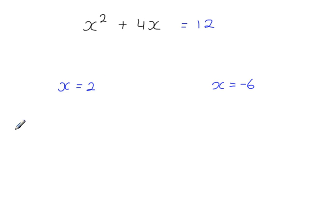So we have x squared. So x is 2, so that's 2 squared. Plus 4x, so plus 4 times 2. So 2 squared is 4, 4 times 2 is 8, and that gives you 12. So that works.